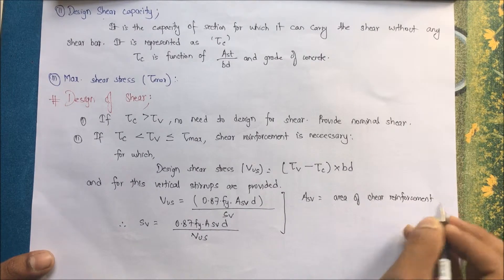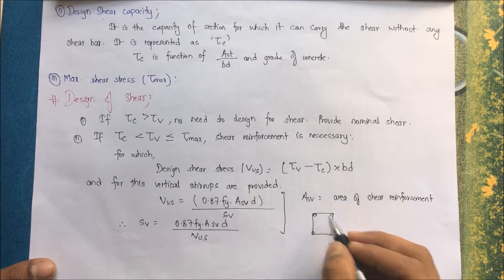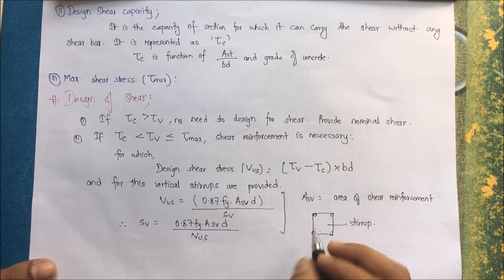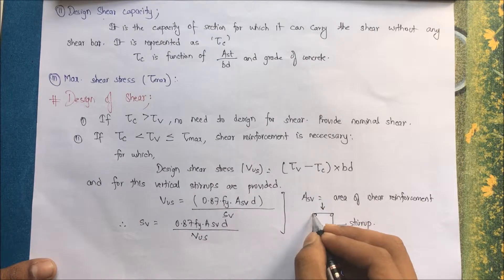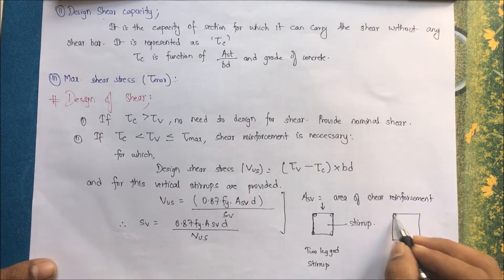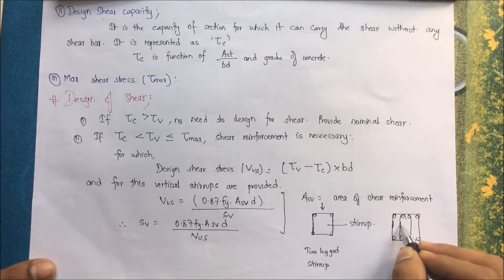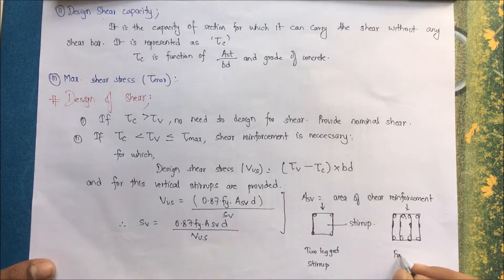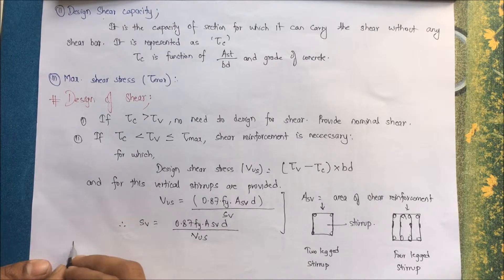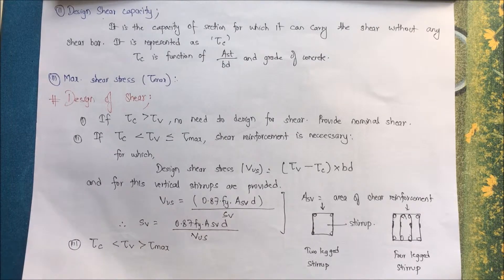Asv is the area of shear reinforcement (stirrups). Stirrups are provided perpendicular to the longitudinal reinforcement, and the shear force is carried by two legs of the stirrup. For a two-leg stirrup, two legs carry the load. If bars are closely spaced with more than four bars, an extra stirrup is provided contributing additional shear resistance — this is a four-leg stirrup.